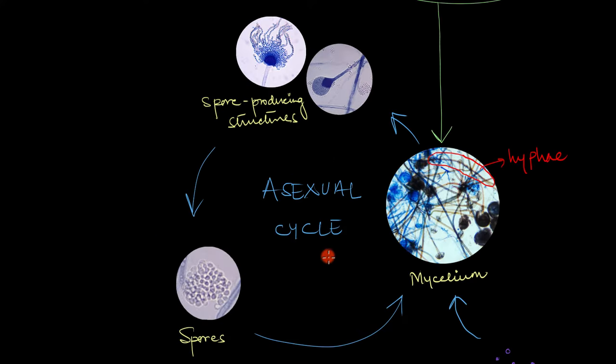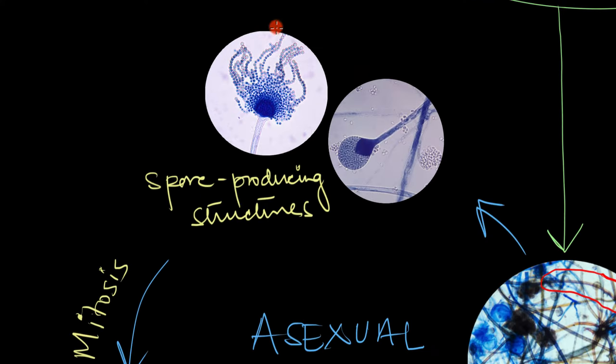During the asexual cycle, the most common mode of reproduction is through the formation of asexual spores, which are produced via mitosis. Let's take a closer look at some of the examples. A few examples of such asexual spores are conidia and sporangiospores.